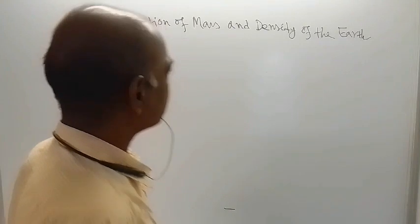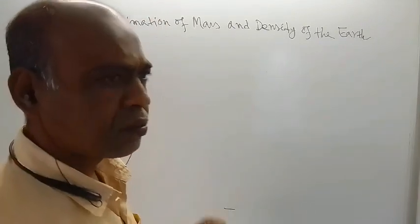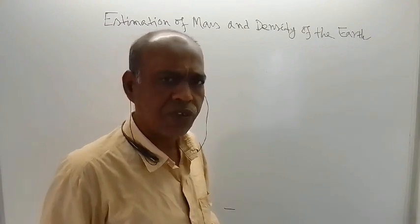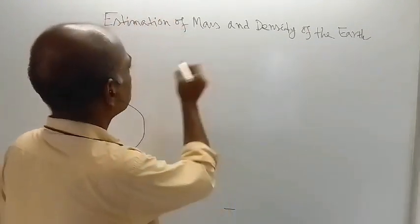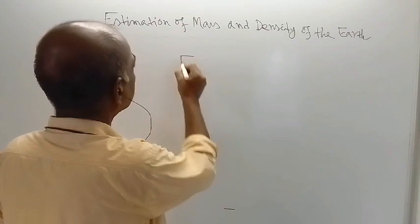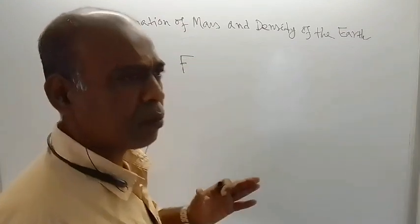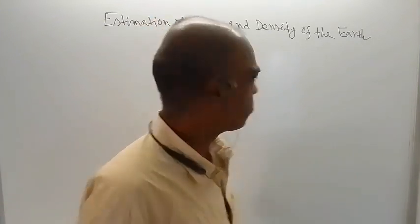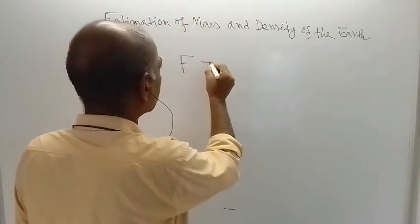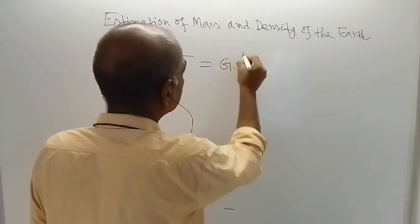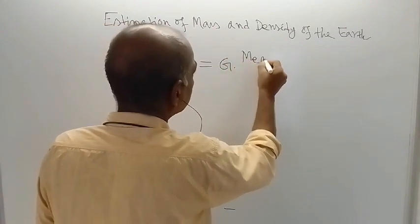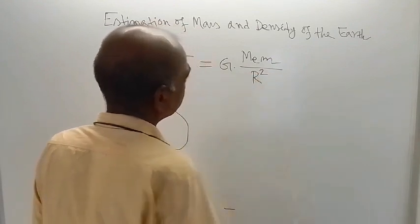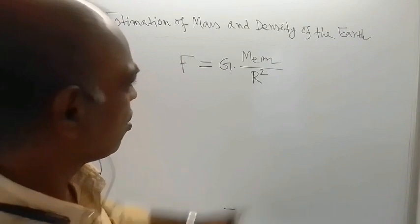The calculation is so easy. According to Newton's law of universal gravitation, we know that the force of attraction between the Earth and any object of mass m is given by this formula: F is equal to G times M times m divided by R square.